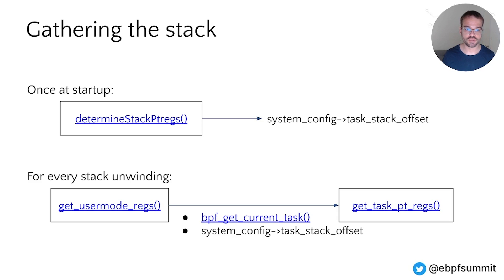The first step happens once at startup: memory of the struct task_struct is inspected for the offset of the field stack. The value of this offset is then placed in an eBPF map called system_config to make it available for eBPF programs. This map is used to communicate configuration options from user space to the eBPF programs, as BTF is not available. The second step happens every time eBPF programs unwind the stack for a process: using the offset from the system_config map and the return value of bpf_get_current_task, a function can get the necessary information for unwinding the stack.